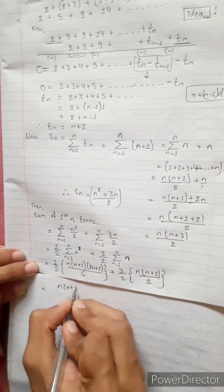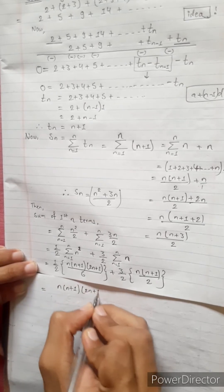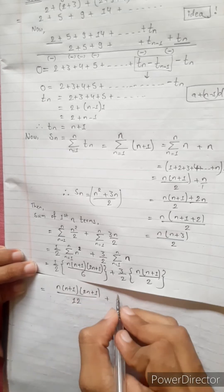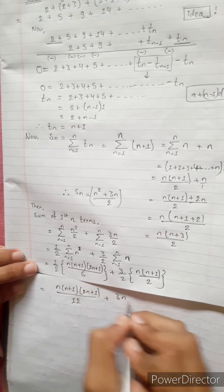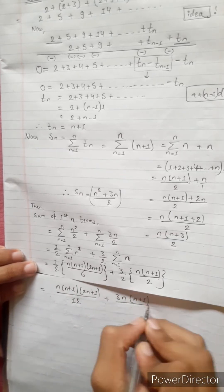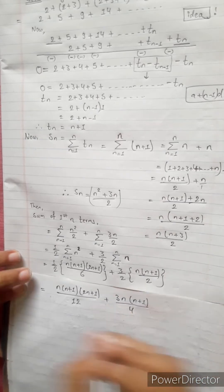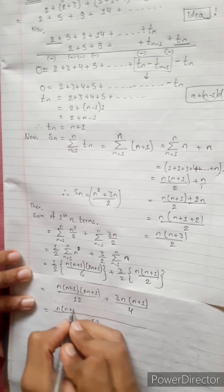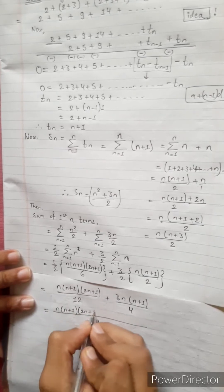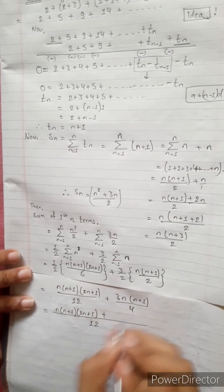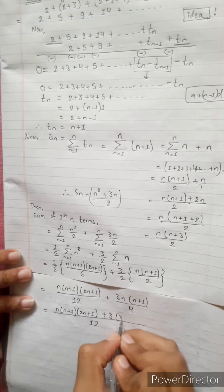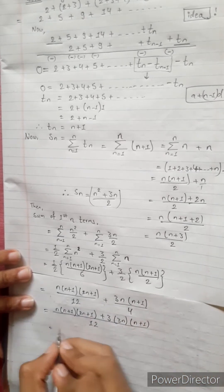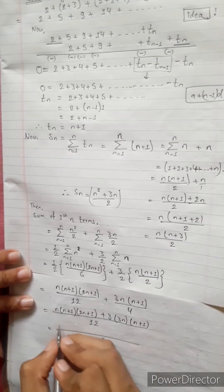Substituting the standard formulas: the sum of n squared formula is n(n+1)(2n+1)/6, multiplied by 1/2; and the sum of first natural numbers is n(n+1)/2, multiplied by 3/2. This gives n(n+1)(2n+1) divided by 12, plus 3n(n+1) divided by 4.